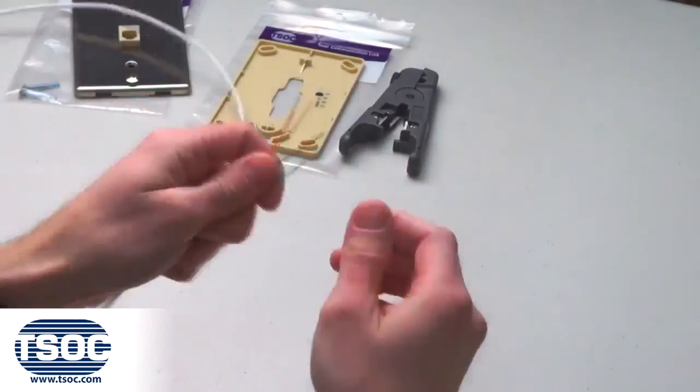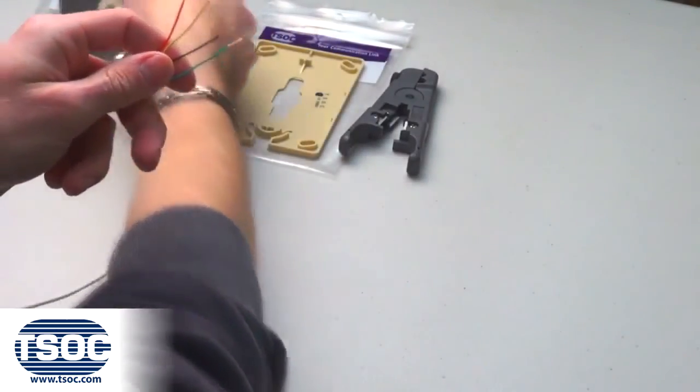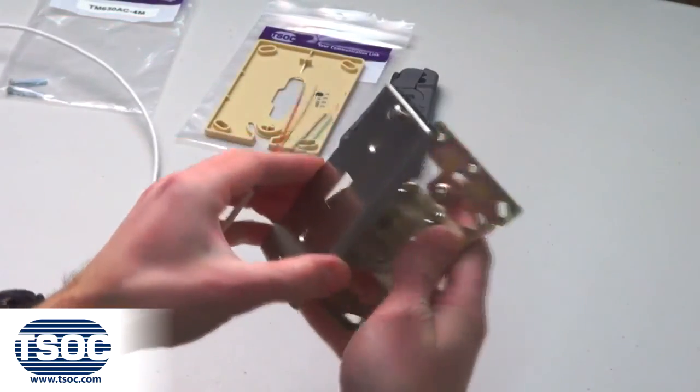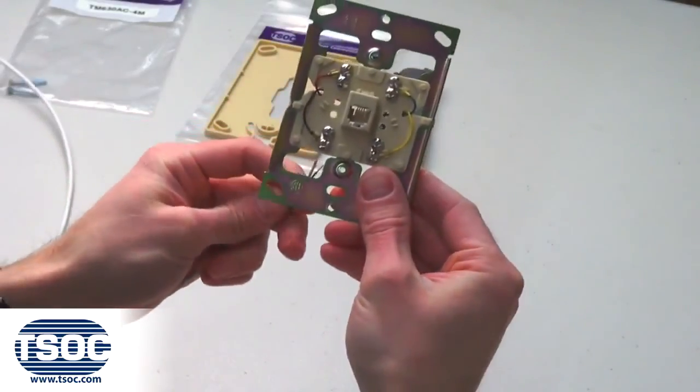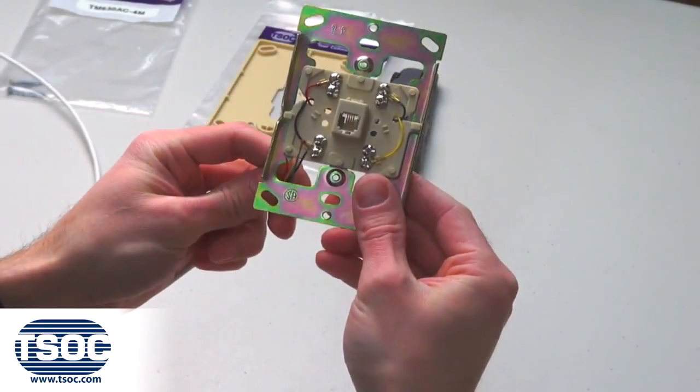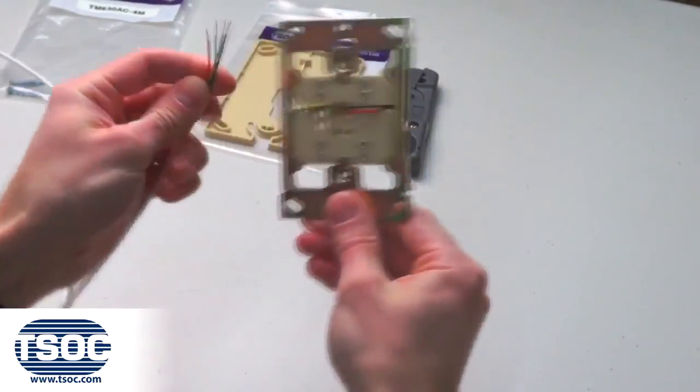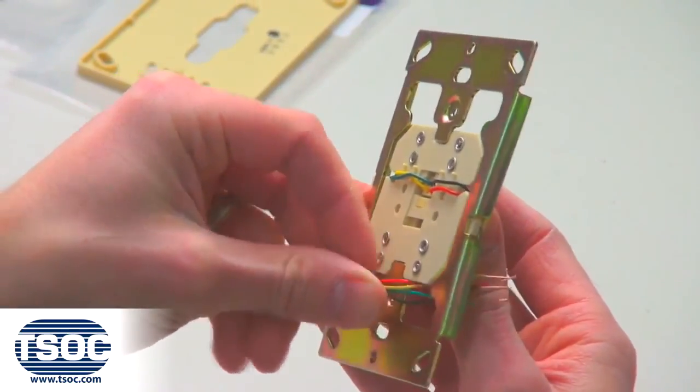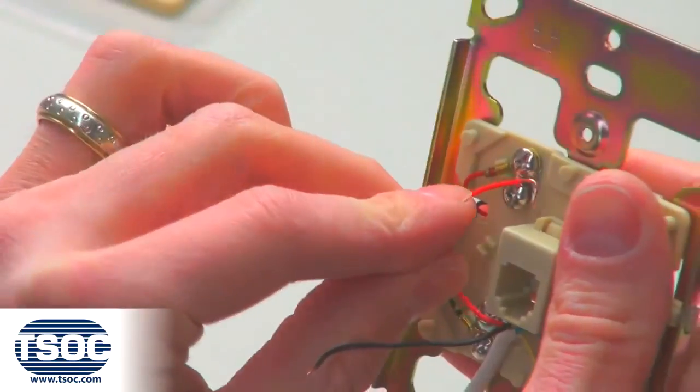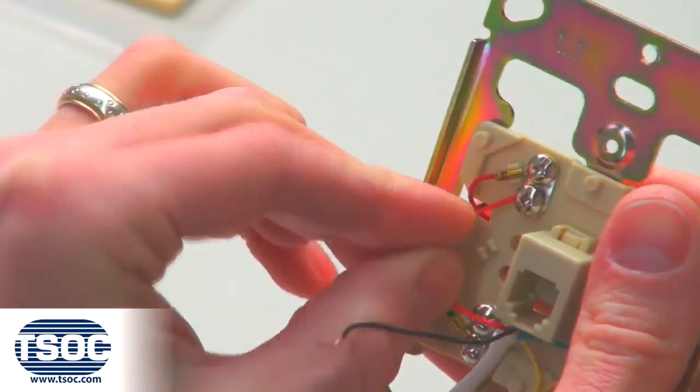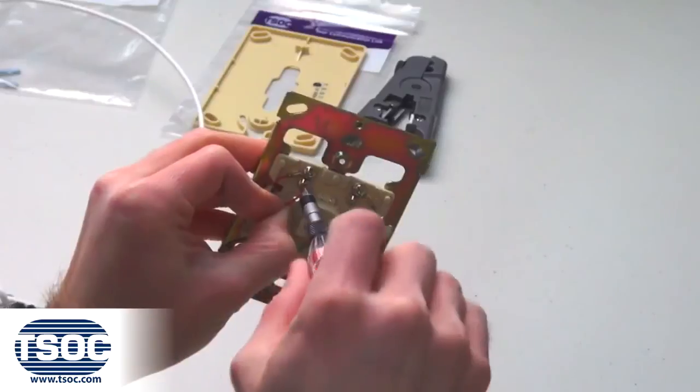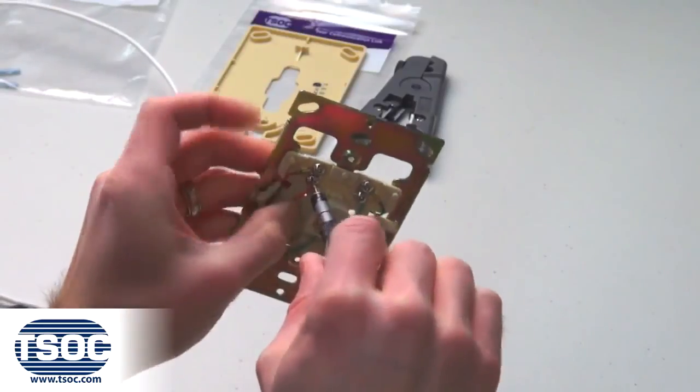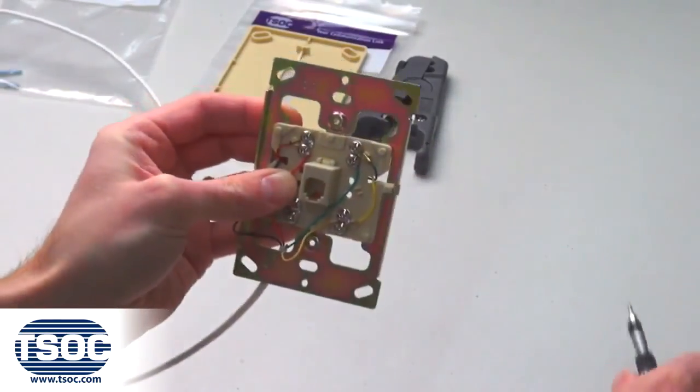Step 4: Feed the UTP cable through any of the available openings on the Universal Wall Mount Jack. Then, follow the corresponding color codes and secure the UTP cable to the screw terminals of the Universal Wall Mount Jack using a Robertson or flathead screwdriver.